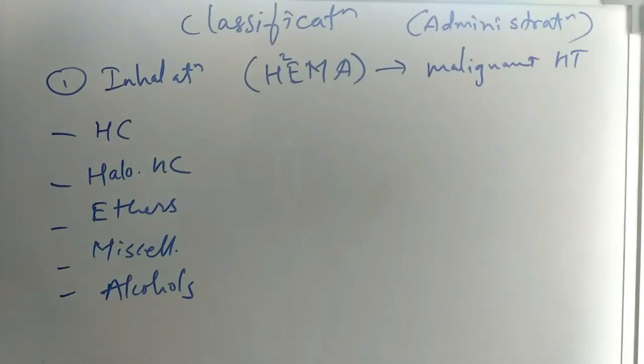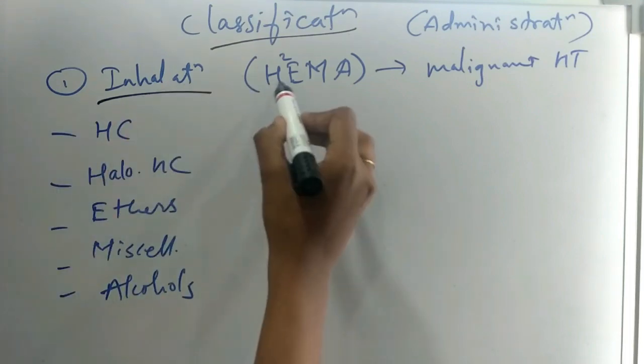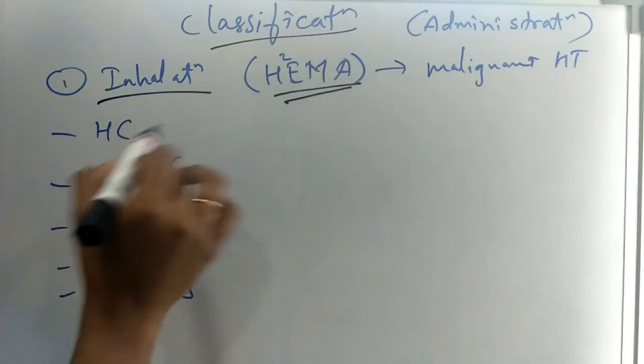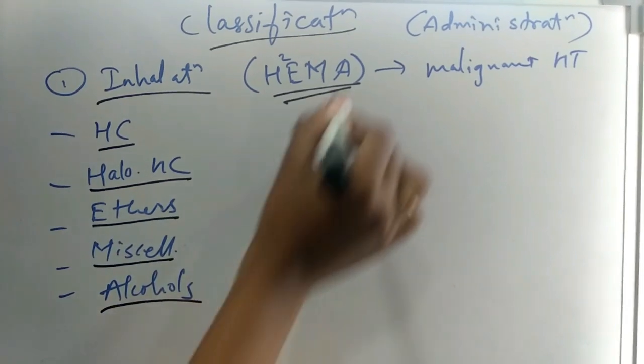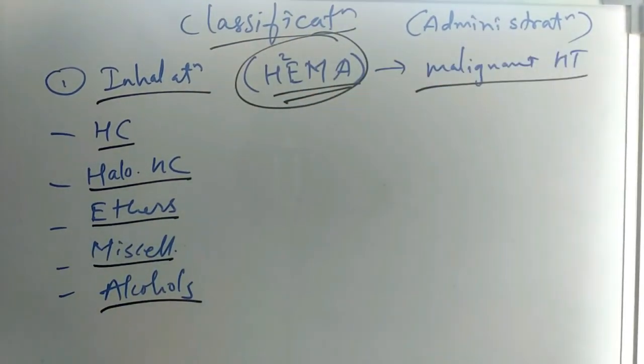The classification is based on route of administration. The first is inhalation. How to memorize inhalation? HEMA - that is hydrocarbons, halogenated hydrocarbons, ethers, miscellaneous, alcohol. This HEMA causes malignant hyperthermia.